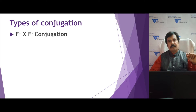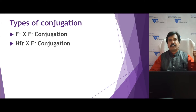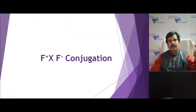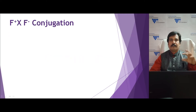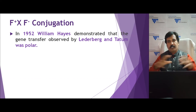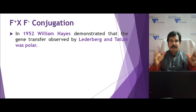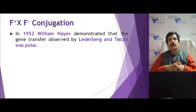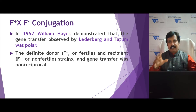Based on the type of genetic material transfer, conjugation can be classified into three basic types: F plus into F minus conjugation, HFR into F minus conjugation, and F prime into F minus conjugation. The F plus into F minus conjugation was first put forward by William Hayes in 1952, demonstrating in a practical way that two types of bacteria — F plus and F minus — exist and that conjugation can happen between them.